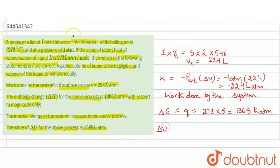Delta U will be equal to Q plus W. So Q is 1365 minus W was minus 224, so it will come out as 1141 liters atmosphere.